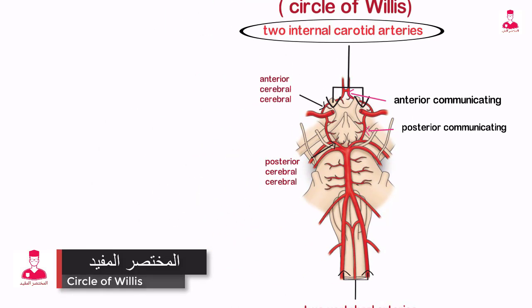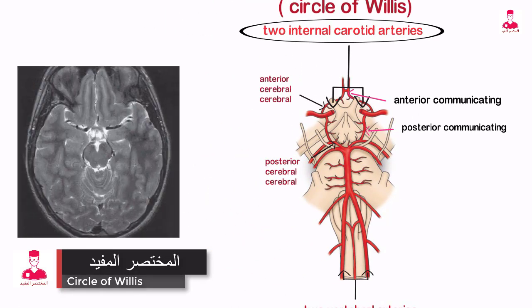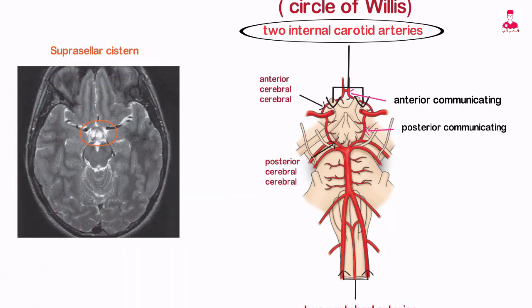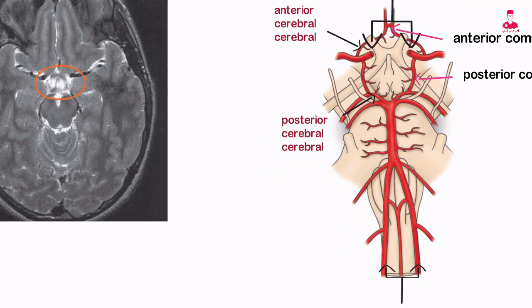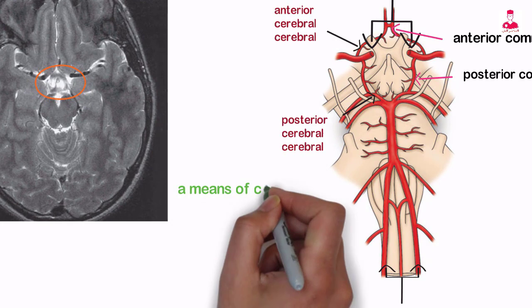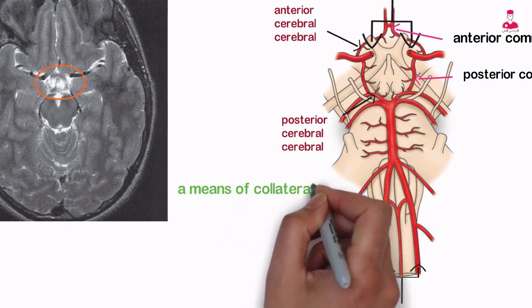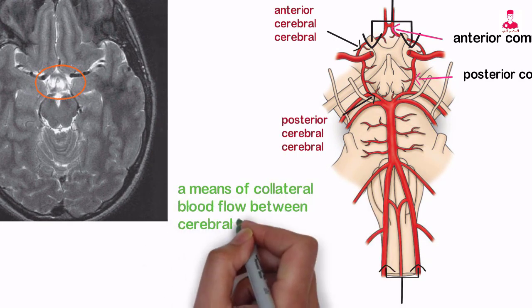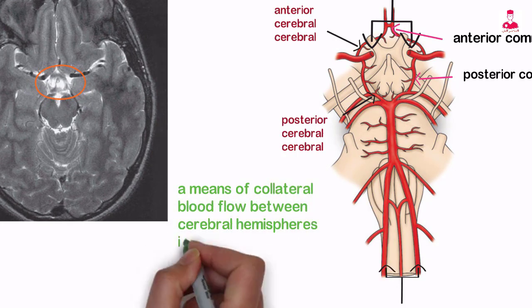The circle is located mainly in the supracellar cistern at the base of the brain. Many normal variations of this circle may occur in individuals. The circle of Willis functions as a means of collateral blood flow between cerebral hemispheres in the event of blockage.